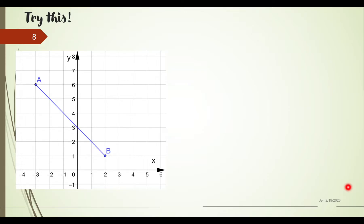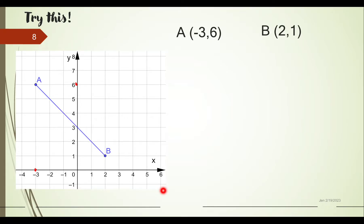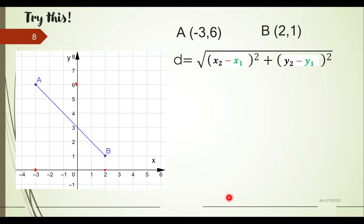Let us apply the formula. We have two points: point A and point B. The question is: what is the distance AB? First, take the coordinates of point A — x is negative 3 and y is 6, so A is (−3, 6). Point B has x-coordinate 2 — going right twice from the y-axis — and y-coordinate 1, going up once. So we substitute these coordinates into the distance formula.